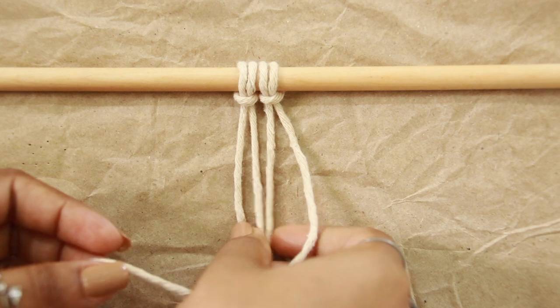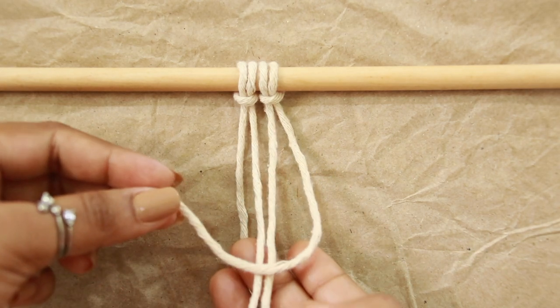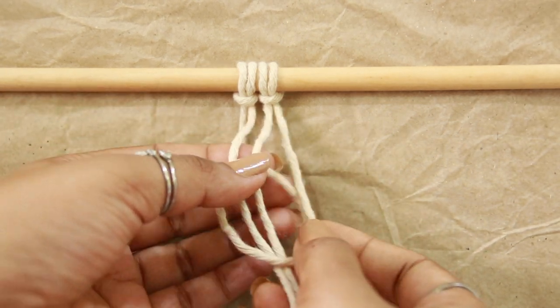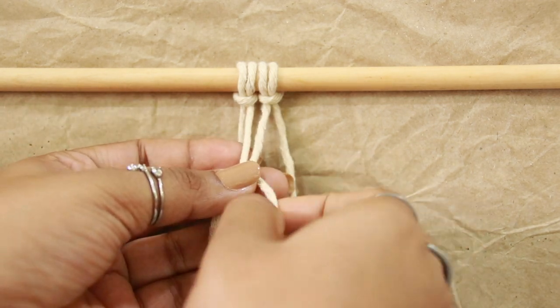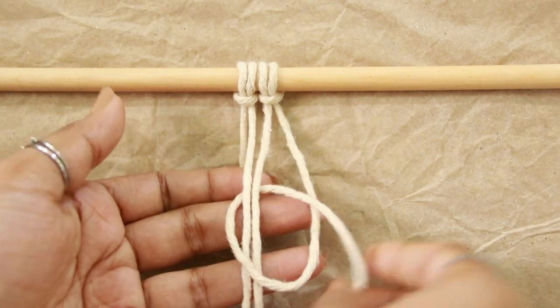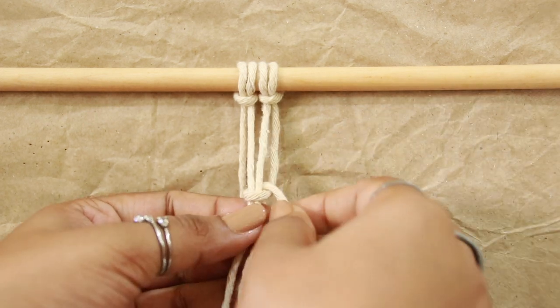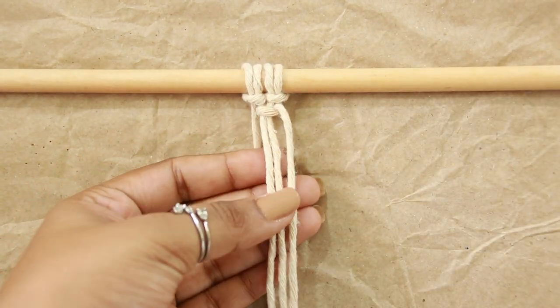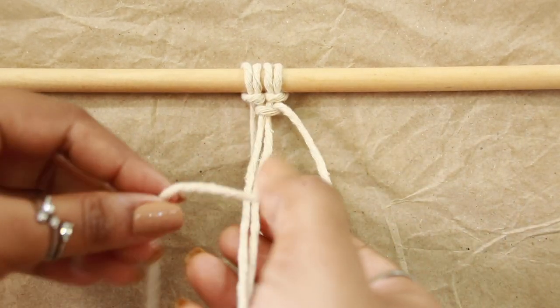Pick any side of working cord, pass over and under both the middle filler cords, pass through the loop and tightly secure the knot. To have a complete vertical lark's head knot, you need to repeat it once again, but not in the similar fashion over and under.